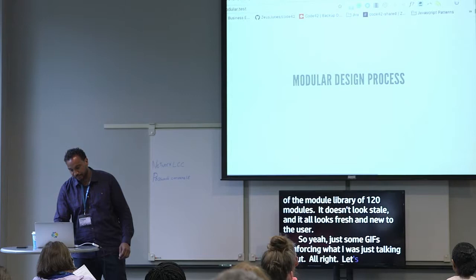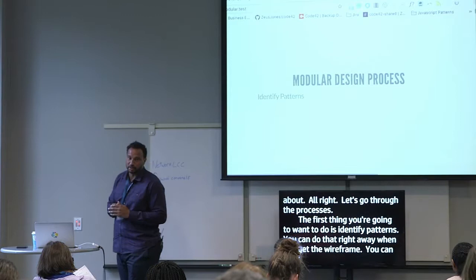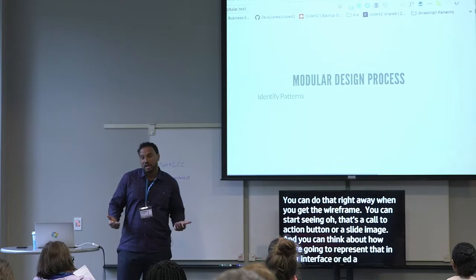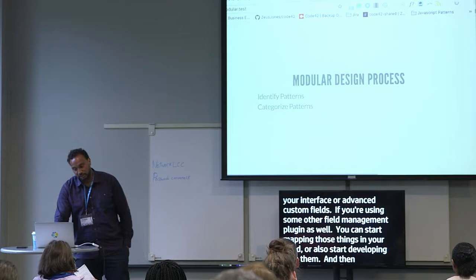Let's go through the process. The first thing you want to do is identify patterns, and you can do that right away when you get the wireframe. You can start seeing, 'That's a call to action button, that's a slide image,' and you can start thinking about how to represent that in your admin interface. If you're using Advanced Custom Fields, you're probably already acclimated to how you'd do that. Then categorize the patterns — is it a design pattern or a content pattern?